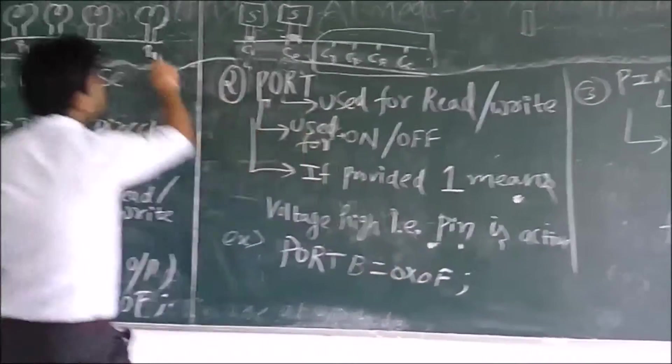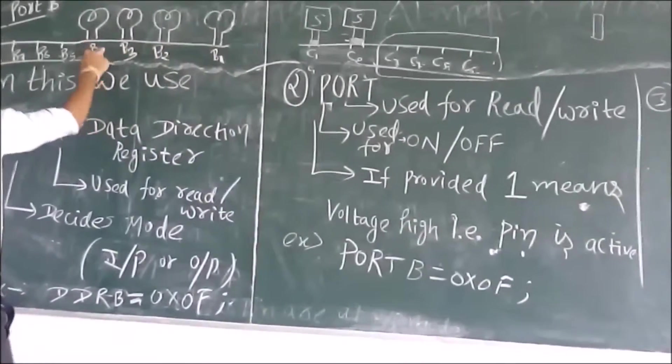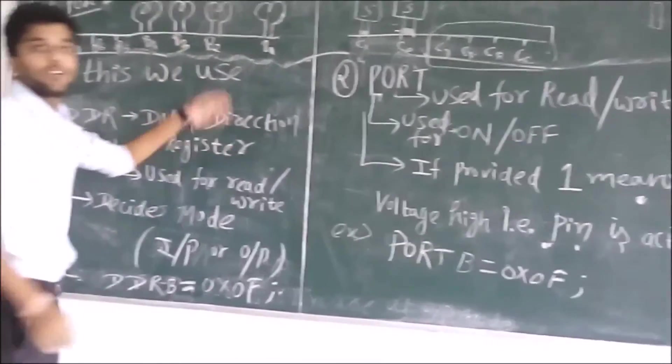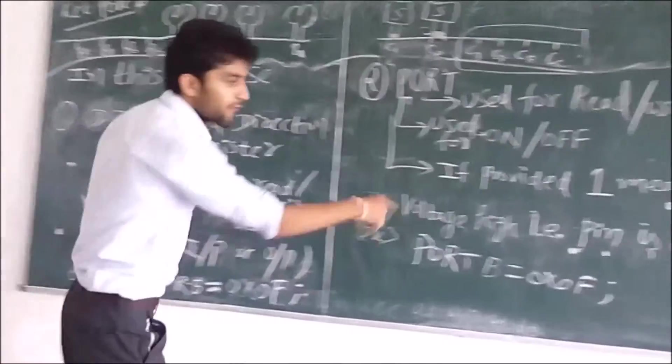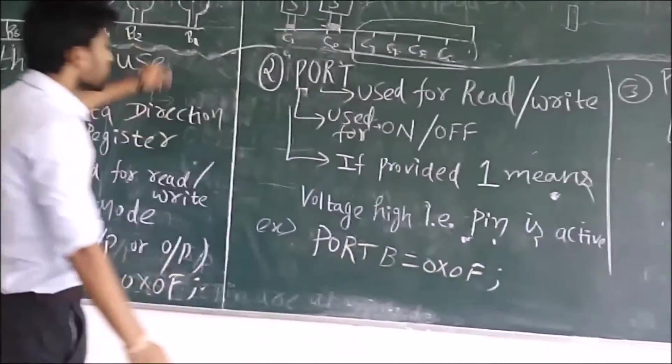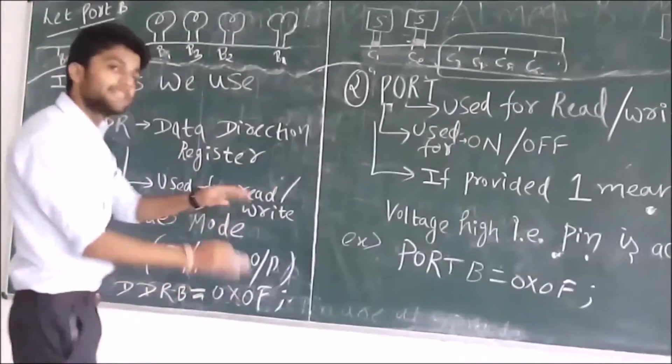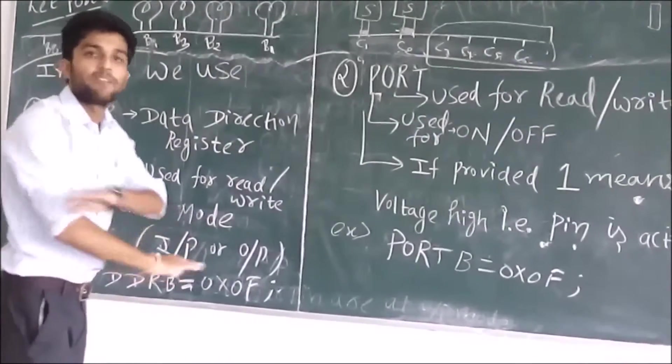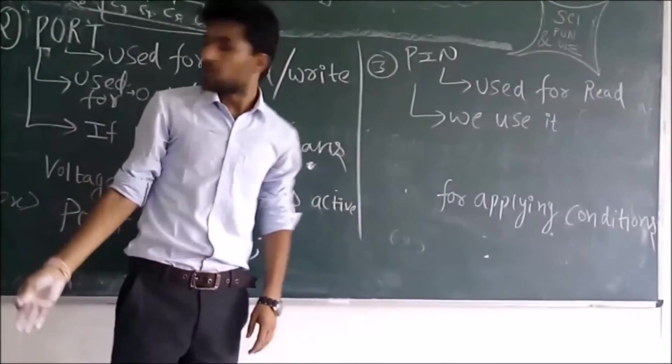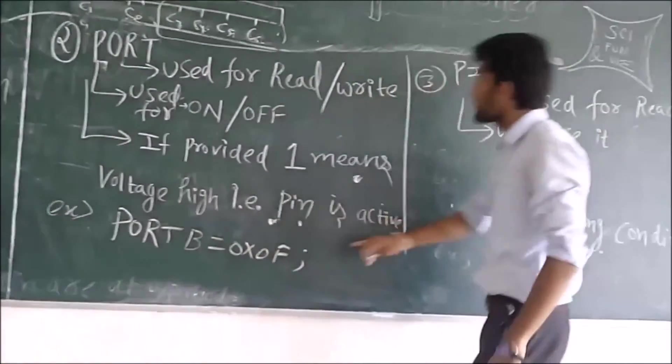PORT B connected to these LEDs. If you provided 0x0F, means these are provided by 1111. 1 means they will glow initially. If you provide 0 here, then it will not glow. It is in output mode, but initially it will not glow. And if you want to glow them in the future, you can apply it later.